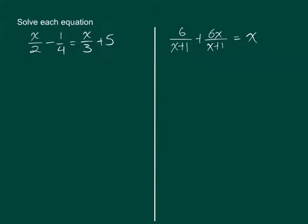Solve each equation. In this first equation you'll notice that there are denominators in three out of the four terms, and that makes life a little difficult. It would be great if we could get rid of these denominators.